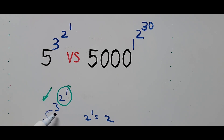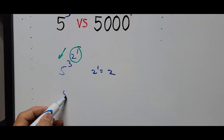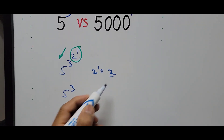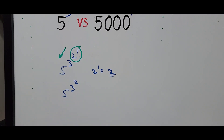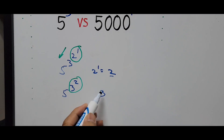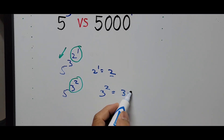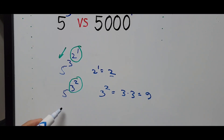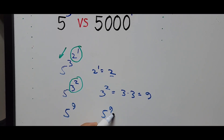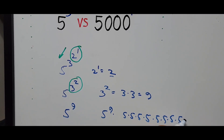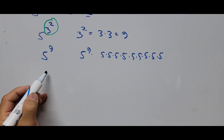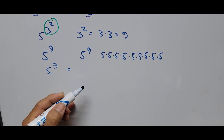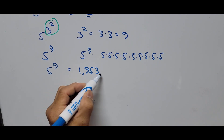We go down to the next level, so this is now 5 raised to the 3 to the second power. The next focus is exponent 3 squared, and 3 to the power 2 — that is 3 times 3 — equals 9. This number is now 5 raised to the power 9, and 5 raised to the power 9 means multiplying 5 by itself 9 times. The value of 5 raised to the power 9 equals 1,953,125.